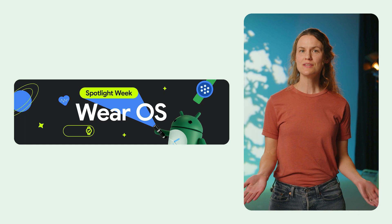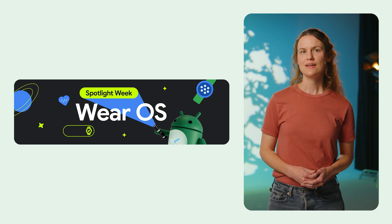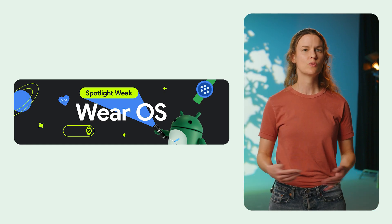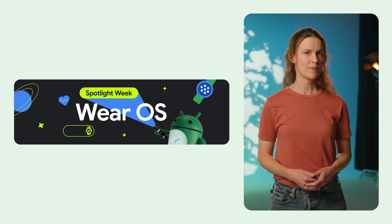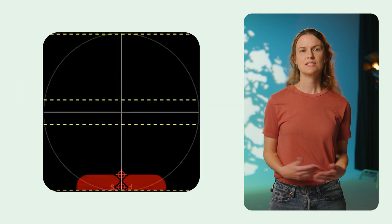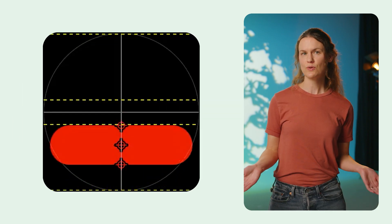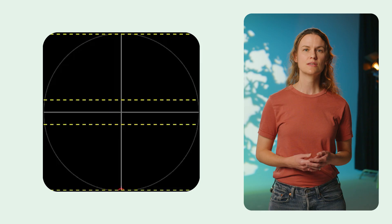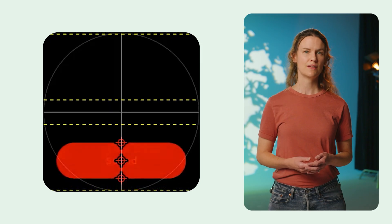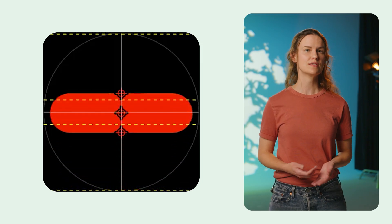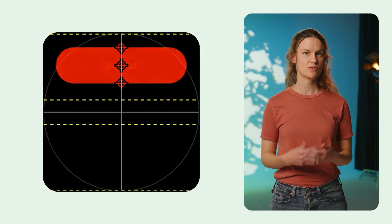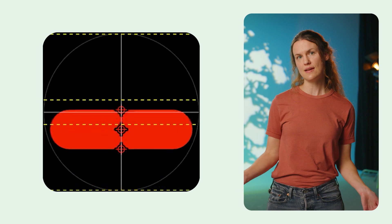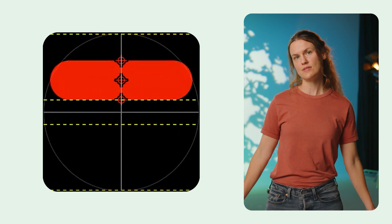Wear OS was our second spotlight week this year. It covered Material 3 Expressive, the Watch Face Push API, and Passkeys. Material 3 Expressive for Wear OS embraces round screens with animations, components, dynamic color, variable fonts, and layouts like the transforming lazy column that scales and fades items as they move to the edges.